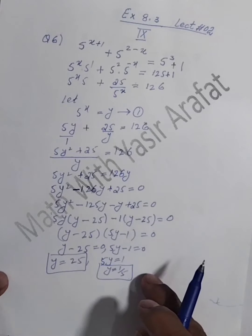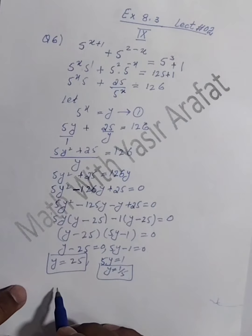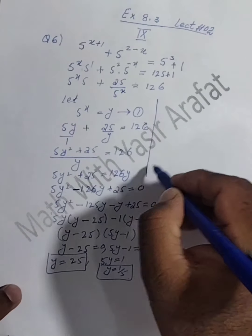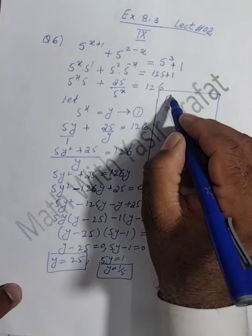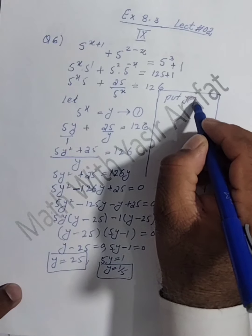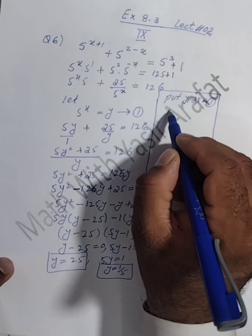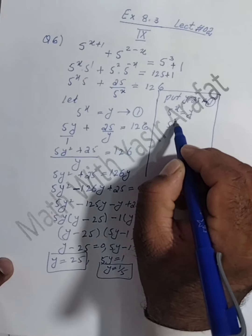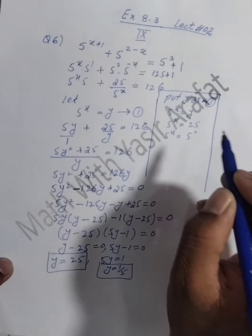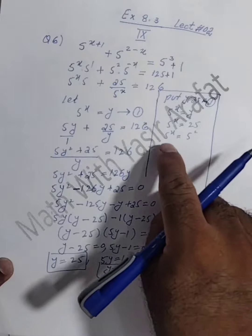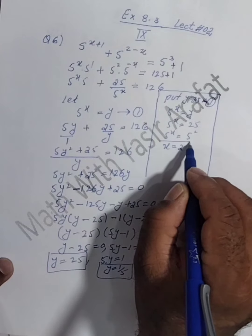There are two values of y; one by one we put them into equation number 1 to find the value of x. Putting y = 25 into equation number 1, which is 5 power x = y: 5^x = 25. Since 25 can be written as 5 power 2, and the bases are the same, the powers are equal to each other, so the value of x is equal to 2.